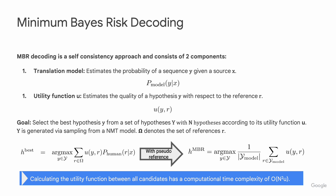While MBR decoding generally results in better translation quality, it comes with a significant drawback: high computational cost. The computational complexity of MBR decoding increases quadratically with the number of hypotheses, making it less practical for large-scale applications. This high cost is a major barrier to its widespread adoption.